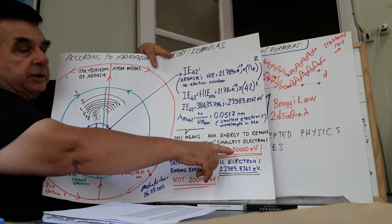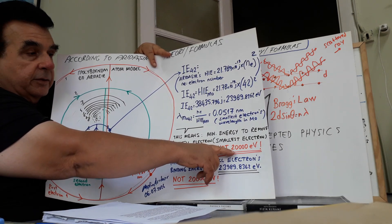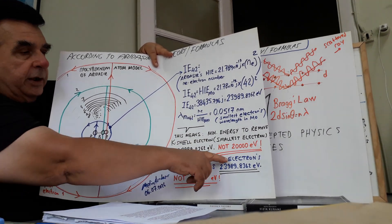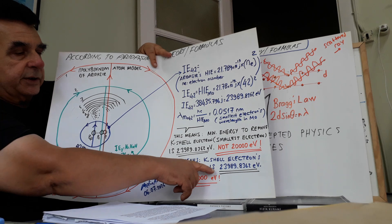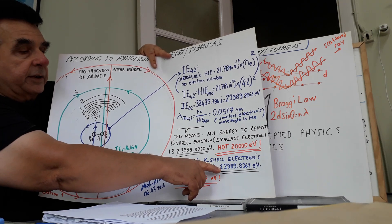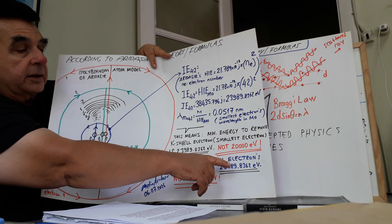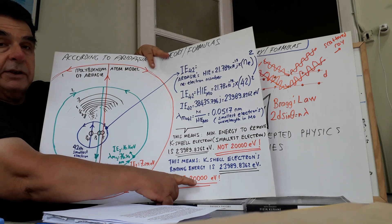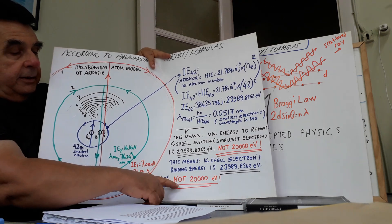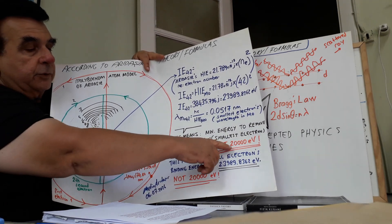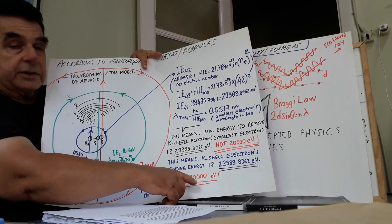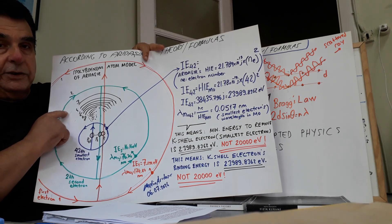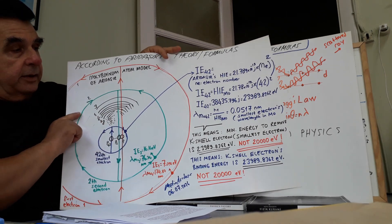In accepted physics, the K-shell electron binding energy of molybdenum is given as 20,000 electron volts. According to me, the K-shell electron binding energy is 23,989.83 electron volts, not 20,000 eV. These accepted values are wrong.